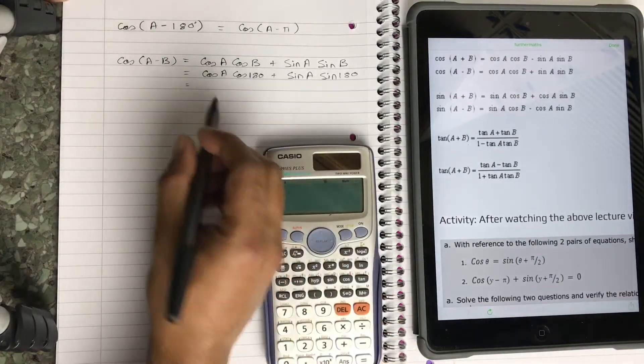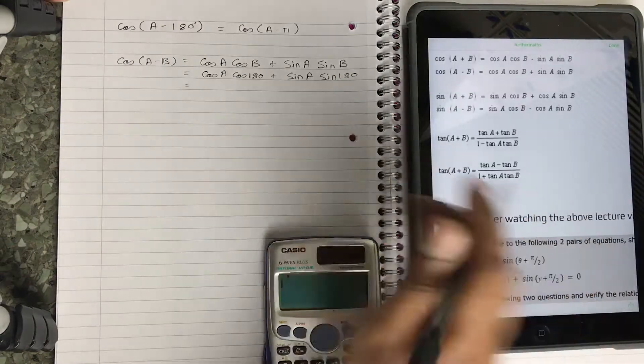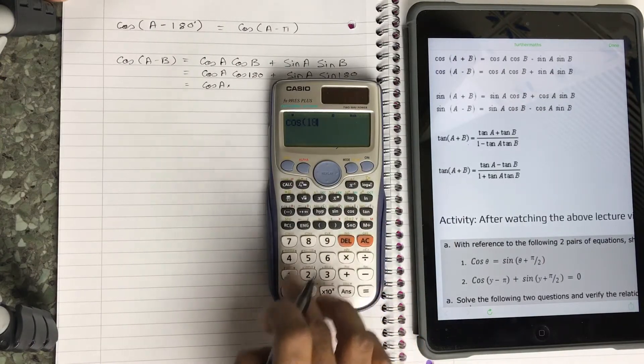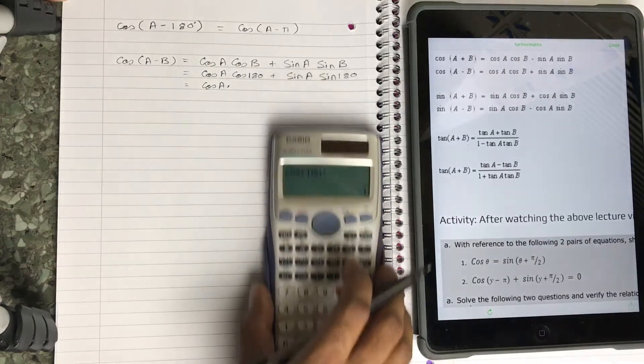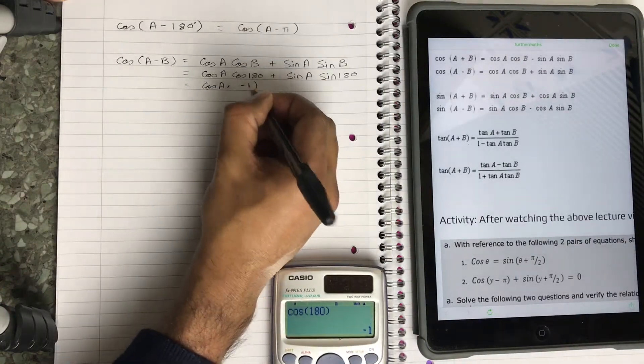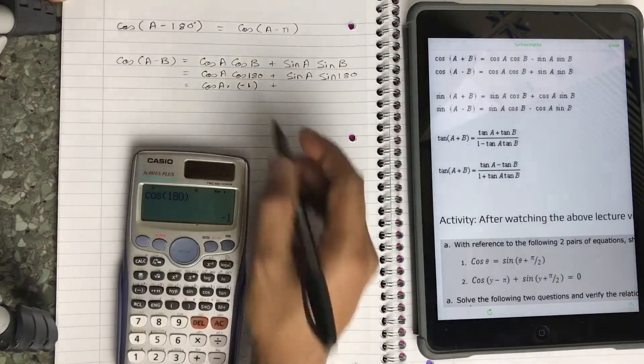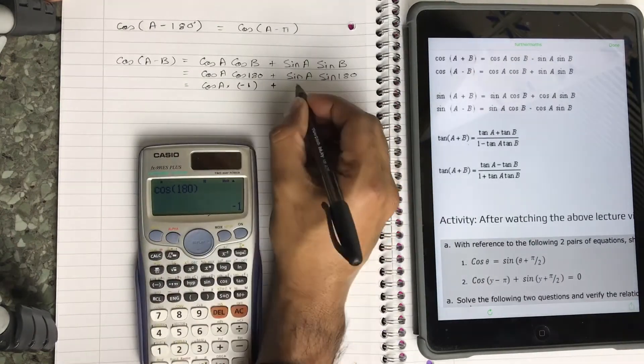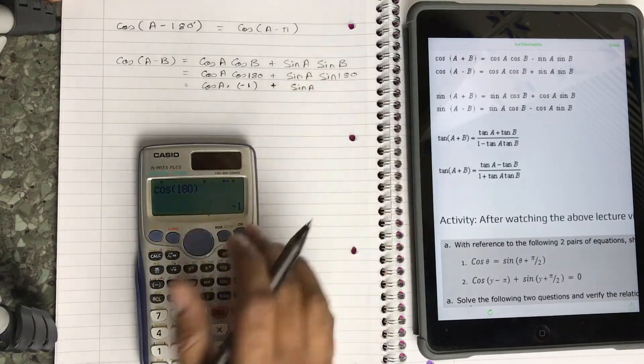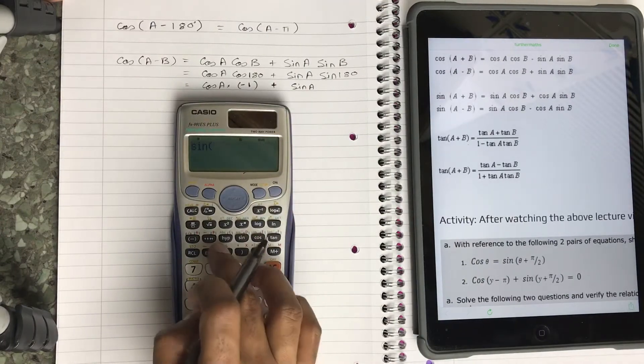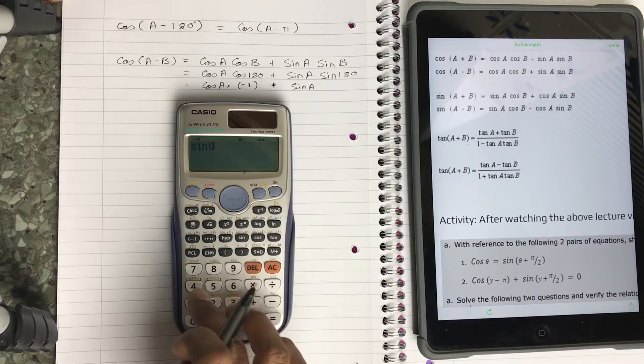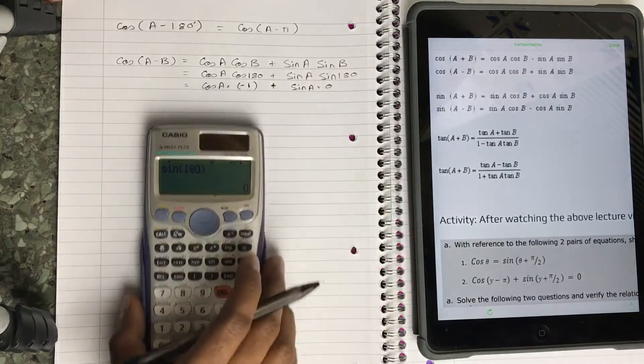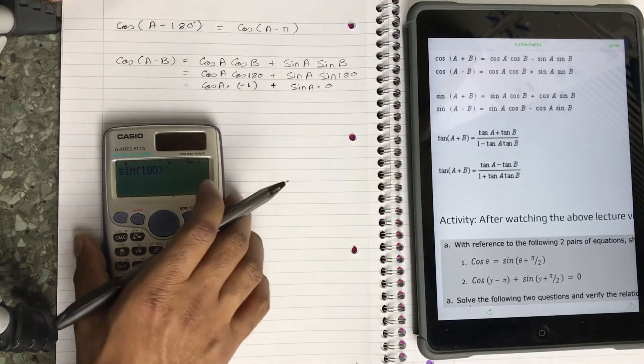So back to the problem: cos(A) times cos(180), so cos(180) equals minus 1, so times minus 1. Plus - always remember brackets are important because it's a negative number - plus sin(A) sin(180). Sin(180) equals zero times zero.